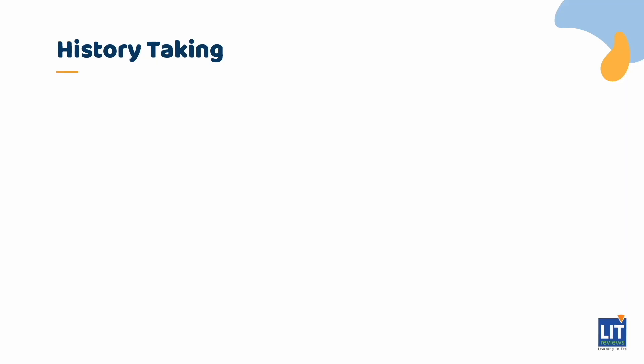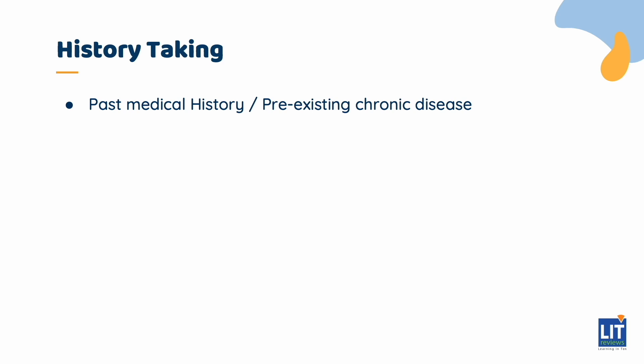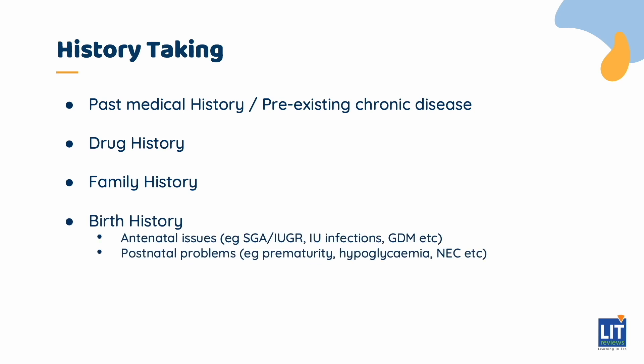A complete history is important, including past medical history looking for evidence of chronic disease, drug history looking for drugs or traditional medicines that may be affecting the child's growth such as steroids or high doses of Ritalin, family history to assess genetic potential as well as inherited problems, birth history for antenatal or postnatal problems, and social history looking for psychosocial factors. A review of systems is also vital, as this may be the only clue you get that there is an underlying pathology — for example, headache and vomiting may suggest an intracranial pathology affecting growth hormone production.